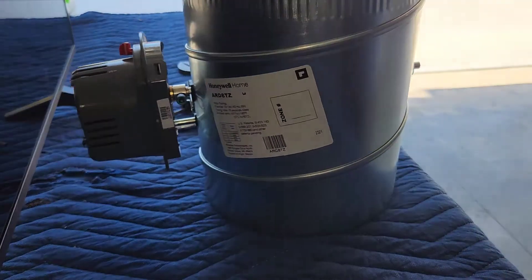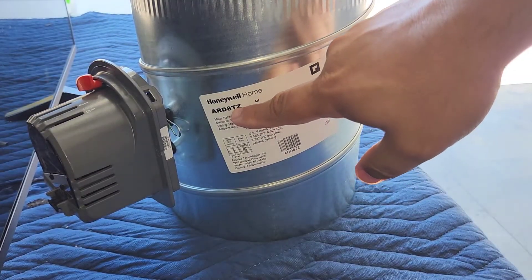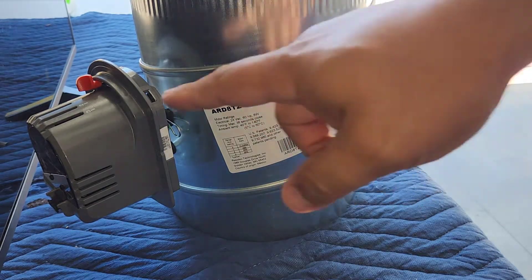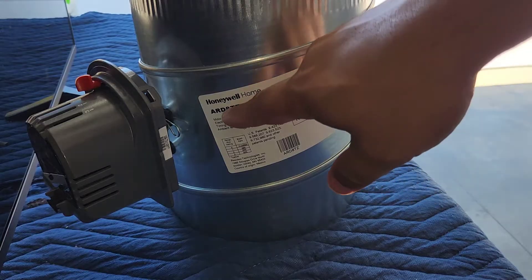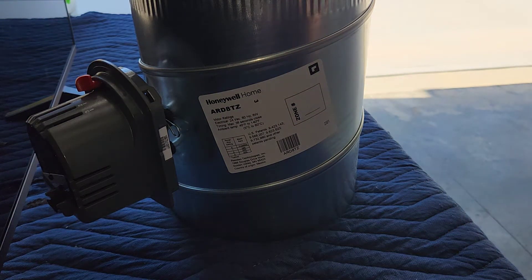Now when you're using this as a zone damper, typically you want it to be normally open and then it would power to close. That way, for some reason, your zone module went bad, maybe the actuator went bad, that this would default to an open state instead of closing, closing off airflow and potentially doing damage to your unit.